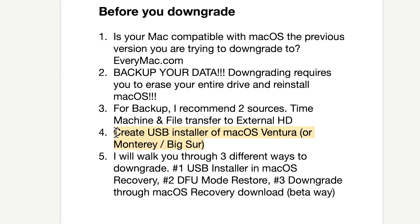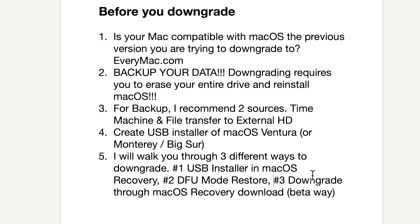We'll go over how to create a USB installer to downgrade to Ventura, Monterey, or Big Sur, and then I'll walk you through three different ways to downgrade. The first way is the USB installer used in recovery. The second is DFU mode restore — the easiest and most recommended way from Apple, but it requires a second Mac. The third way is to downgrade through macOS Recovery, where after erasing the drive the previous version should appear.